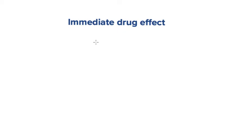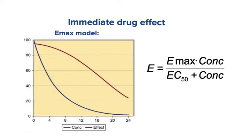To do that we need to use two models. The first one is known as the Emax model. The Emax model describes the pharmacological drug effect in terms of Emax, which is the maximum efficacy that a drug can achieve, and the EC50, which is the concentration at which half of the maximum efficacy is achieved. Using this formula we can get a numerical value of drug efficacy at any given concentration.